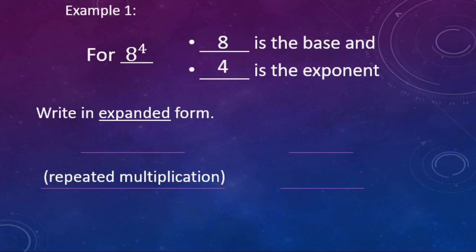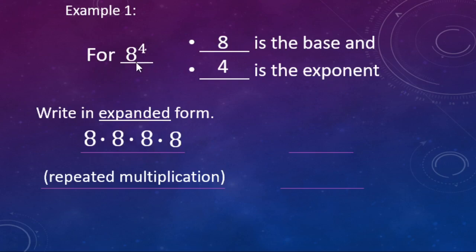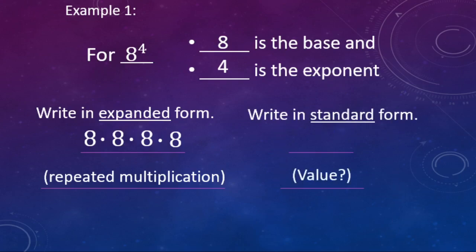We can rewrite this in expanded form, where you actually show the multiplication. From our definition of a power, we have four eights being multiplied together: one eight, times a second eight, times three eights, times four eights. For standard form we just find the value of the power. You can type it out or use the exponent button on your calculator — eight to the fourth power is four thousand ninety-six.